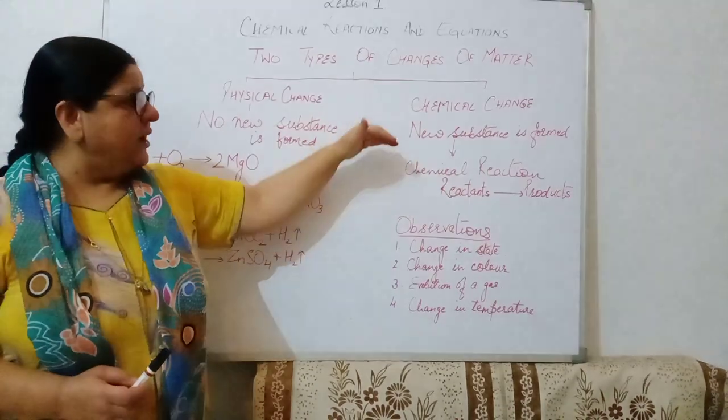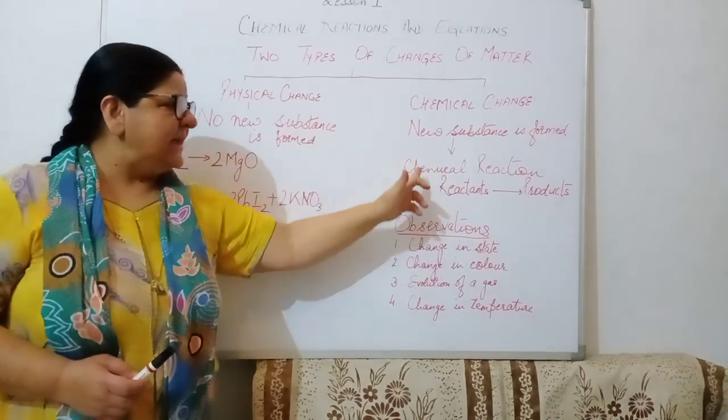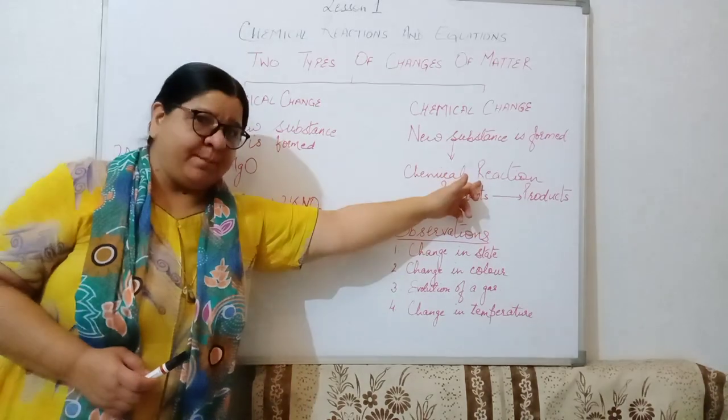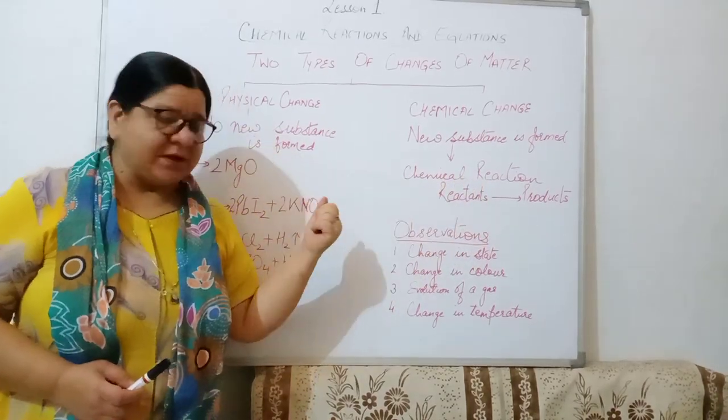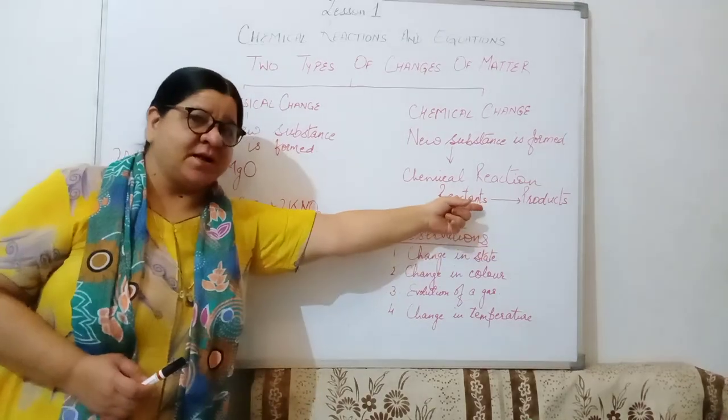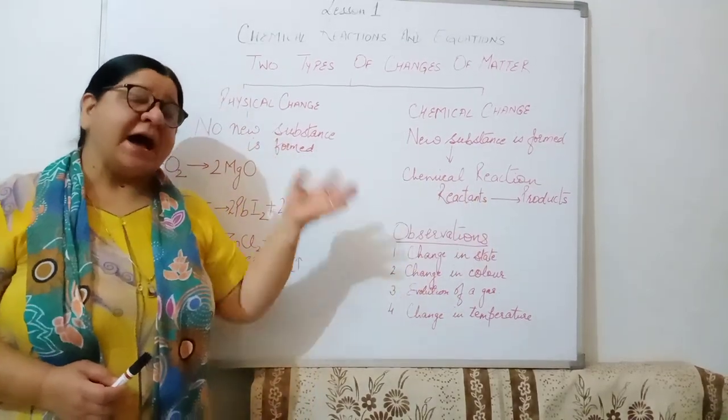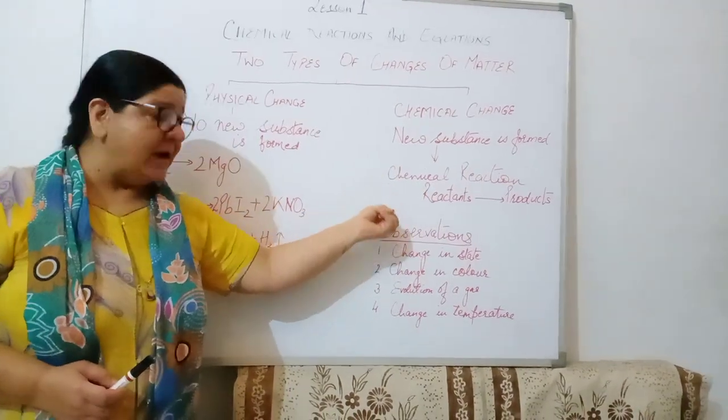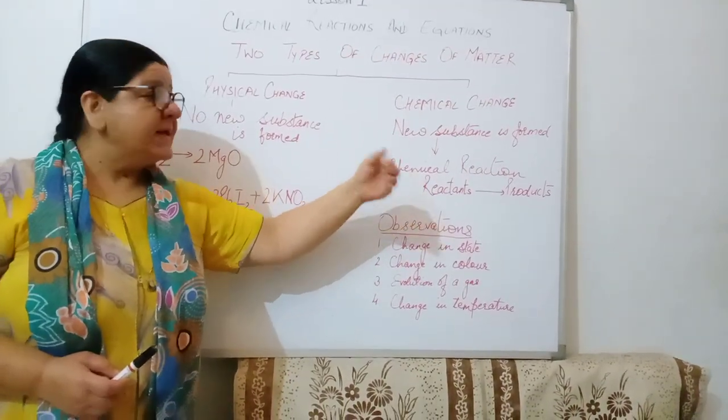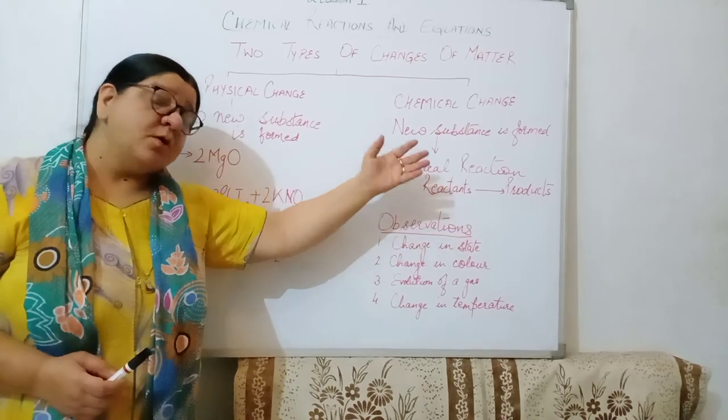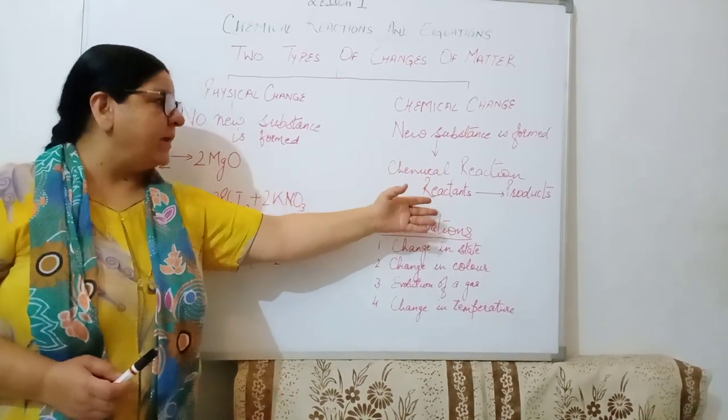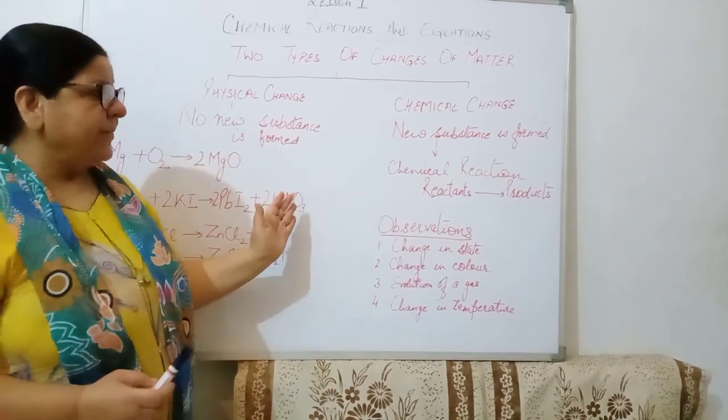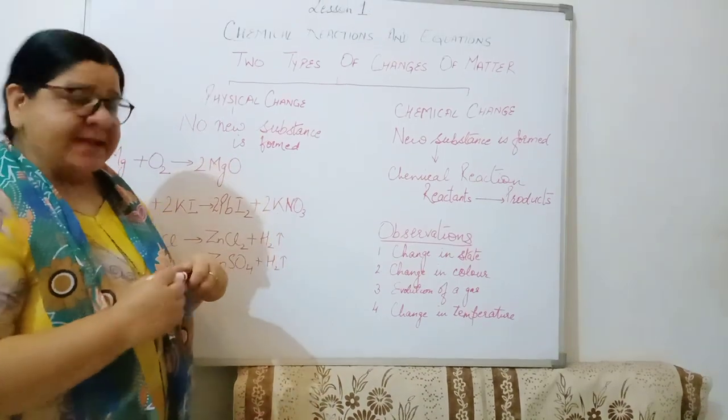So that means a chemical reaction has taken place. Whenever a new substance is formed, we say that chemical reaction has taken place. And for a chemical reaction to take place, there are always two things. One is the reactants and the other are the products which are formed after the reaction. Reactants, it can be maybe one or more than one. Same way, the products can be one or more than one. Reactants are always written on the left hand side and products always on the right hand side.